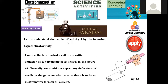Let us understand the results of activity 9 through the following hypothetical activity. We take a coil system and connect its two terminals with either an ammeter or galvanometer, as shown in the figure. The ammeter measures the strength of the current, while the galvanometer monitors potential difference. Initially, we would not expect any deflection of the needle in the galvanometer, because there is no change in the electromotive force — no EMF is generated, so the needle remains at rest.